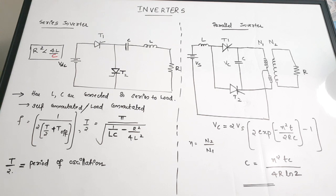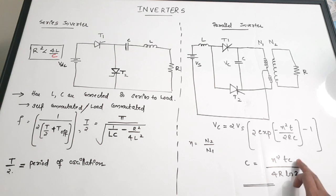Here Tc is the circuit turn-off time. These are the important equations for the series and parallel inverter.